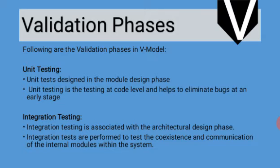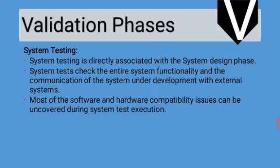System testing is the next validation phase and is directly associated with the system design phase. System testing checks the entire system functionality and the communication of the system under development with external systems. Most software and hardware compatibility issues can be uncovered during system test execution, including hardware compatibility and communication with external systems.